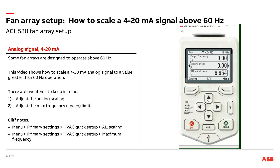Hi, Tim Skell here, ABB HVAC application engineering. Today I'm going to take a look at starting up an ACH 580 with a fan array application, specifically looking at the analog input signal. They have a 4 to 20 milliamp signal from their controller that they would like to have equal 0 to 82 hertz on the VFD. So let's see how you can make that happen quickly.